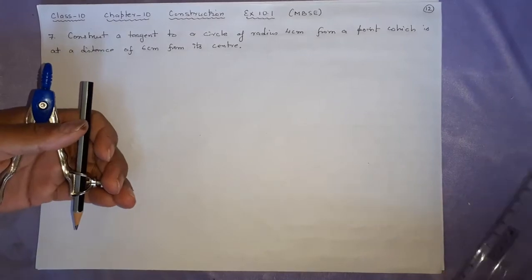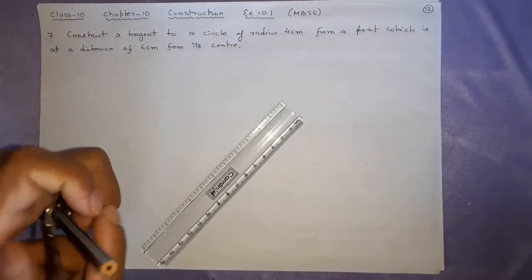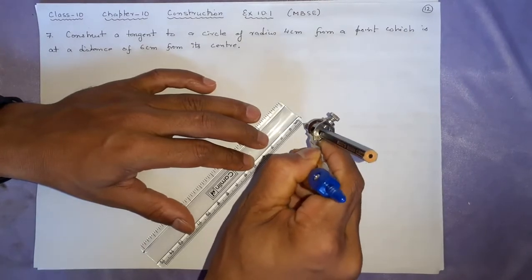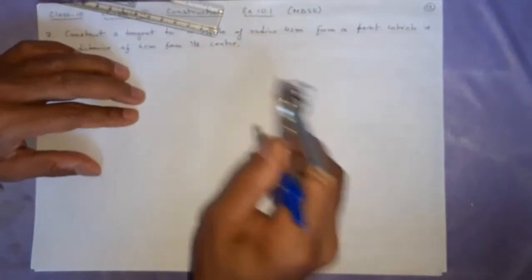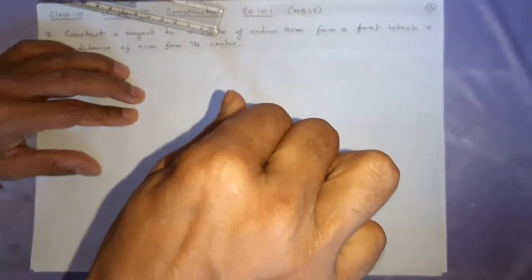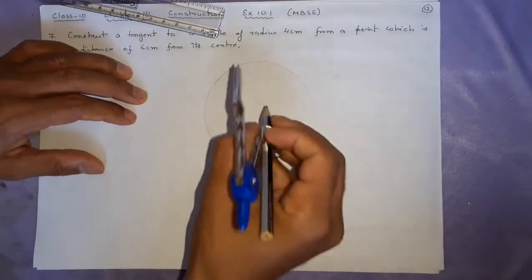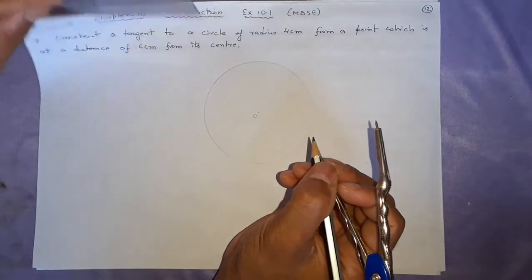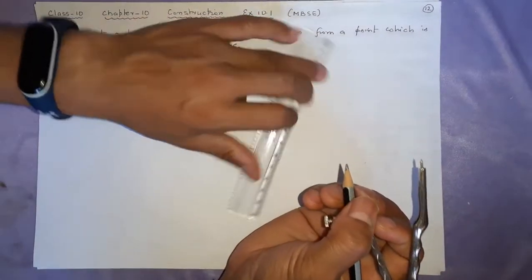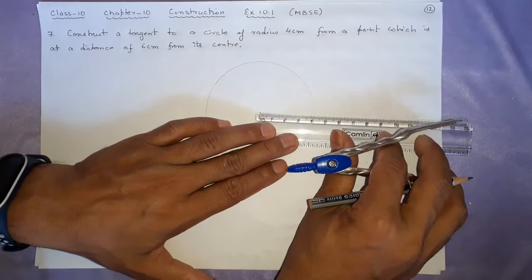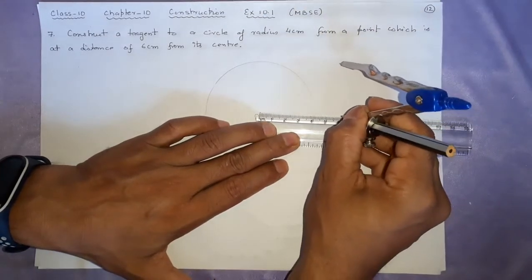So we're not wasting time on the same type of questions. This is a 4-centimeter radius. We'll be taking somewhere here, and 6 centimeters away you are going to take a point O. This is 6 here.